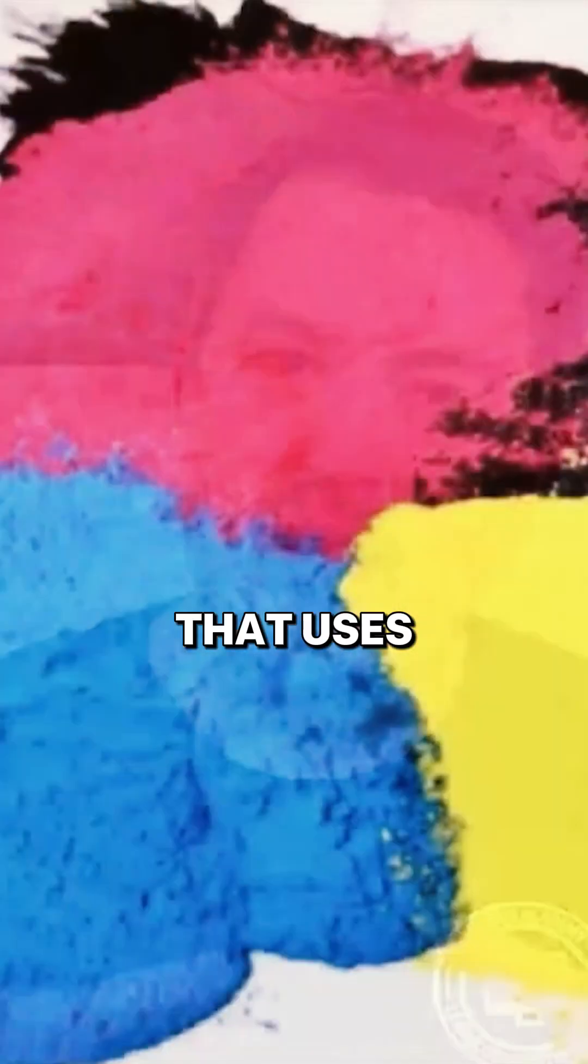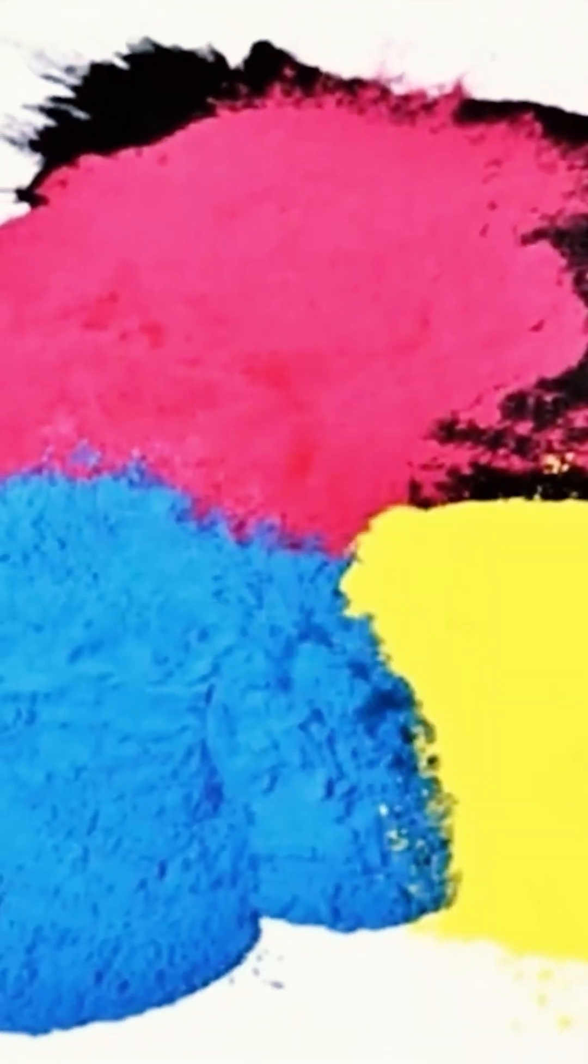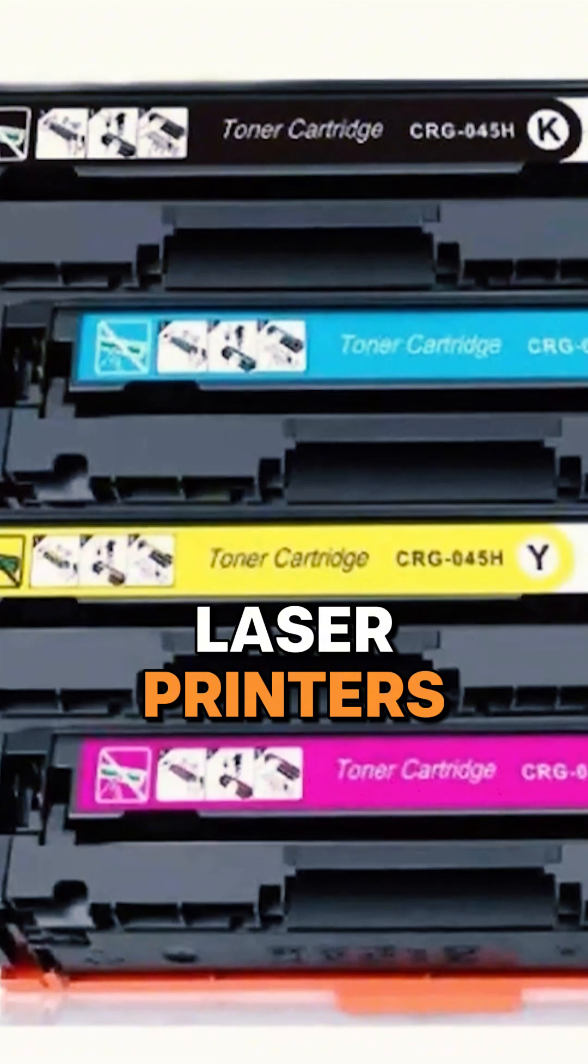Now, there's a whole second technology or methodology for how to get the marks to appear on paper on a printer. And that uses a material called toner. And these are also called laser printers. And the way it works is this.